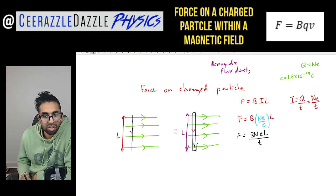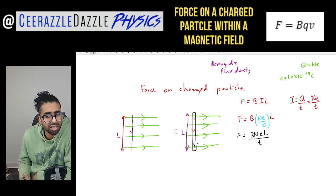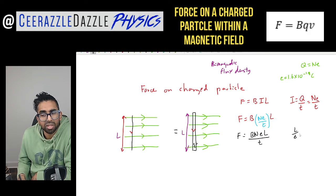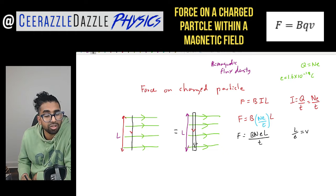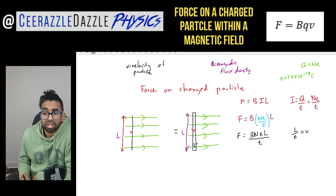Let's say you are this electron and you have moved this length in a certain unit of time. If you are the electron, you're going to travel distance L divided by a certain amount of time. What is travelling a distance L divided by t? That is known as the velocity — that will be equal to V, the velocity of the electron as it is moving. So V equals the velocity of the particle, meaning L over t is equal to V.